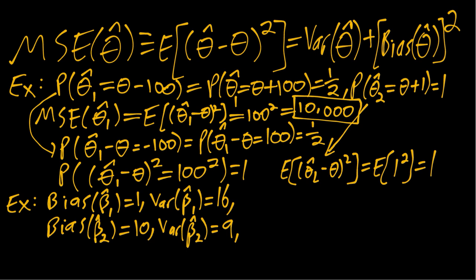So if we plug those values into our second equivalent formulation of MSE, we take the variance and then we add the square of the bias. So for beta hat one, take the variance, 16 plus the square of the bias, 1 squared, and we get 17.